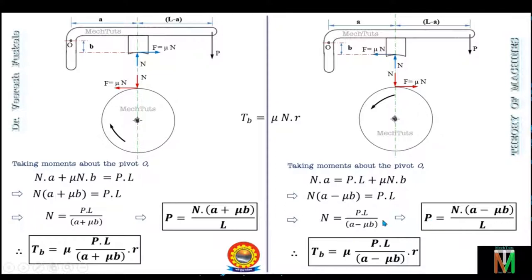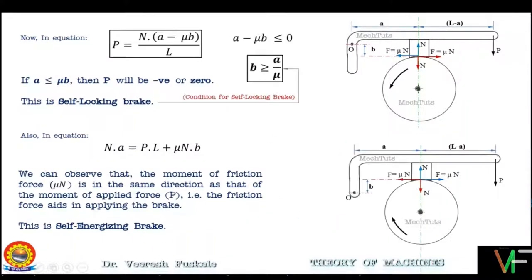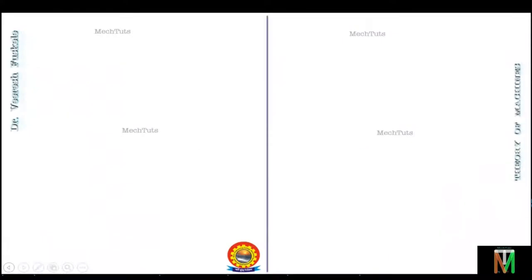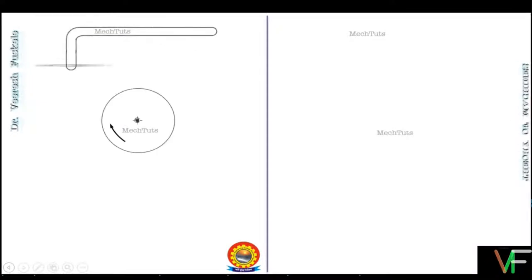We also learned about the self-locking brake and self-energizing brake. In today's lecture we will discuss the third configuration of the single block brake, in which the fulcrum point lies below the line of action of the friction force. We will first analyze clockwise rotation, then anticlockwise rotation, and find the conditions for self-locking and self-energizing brakes.